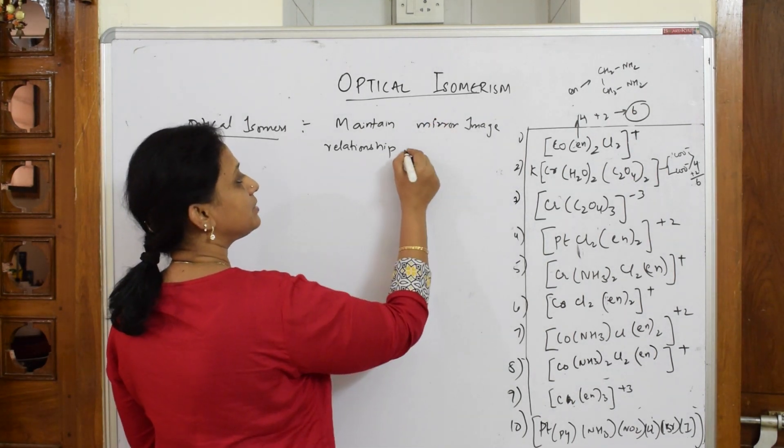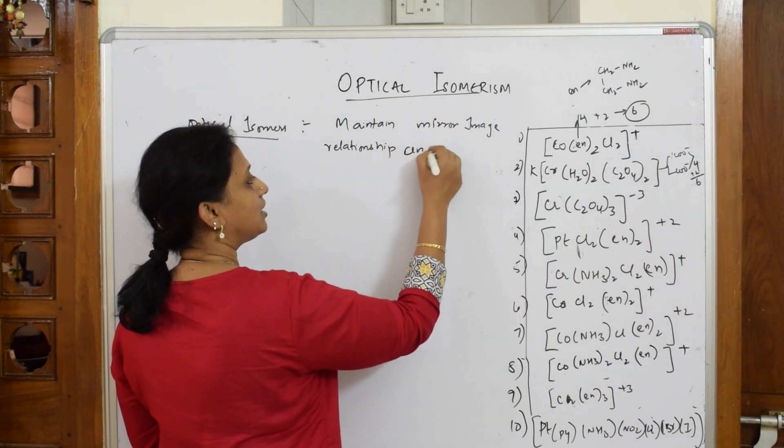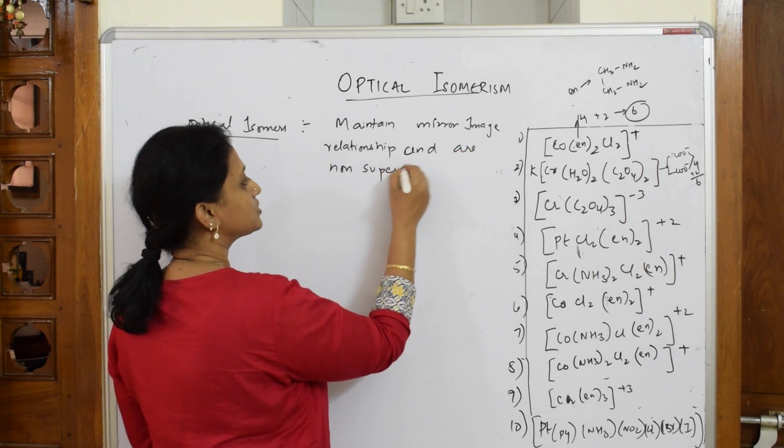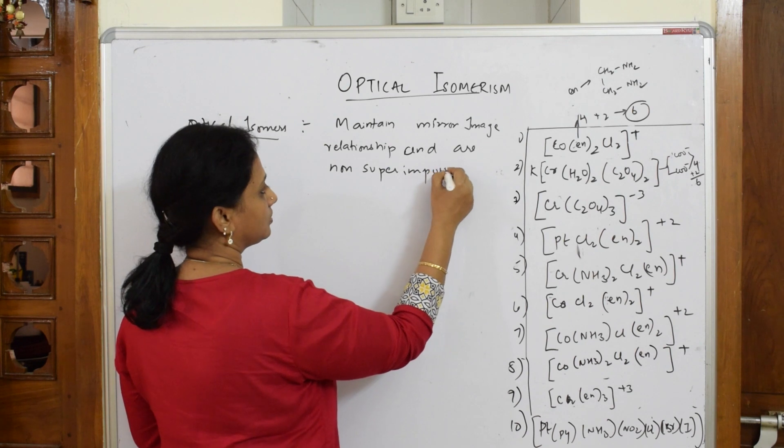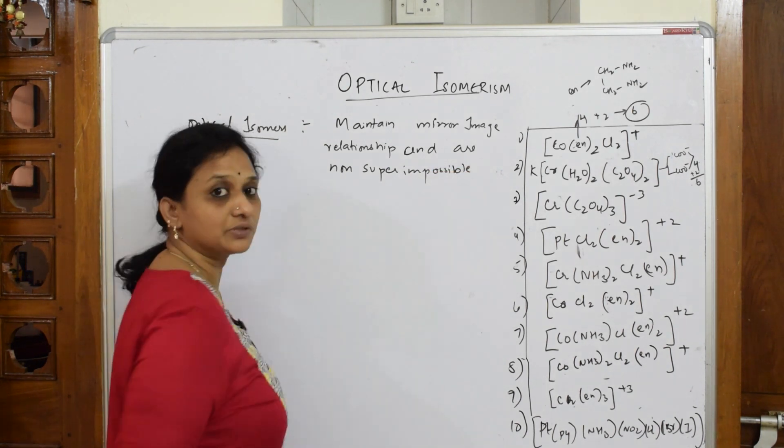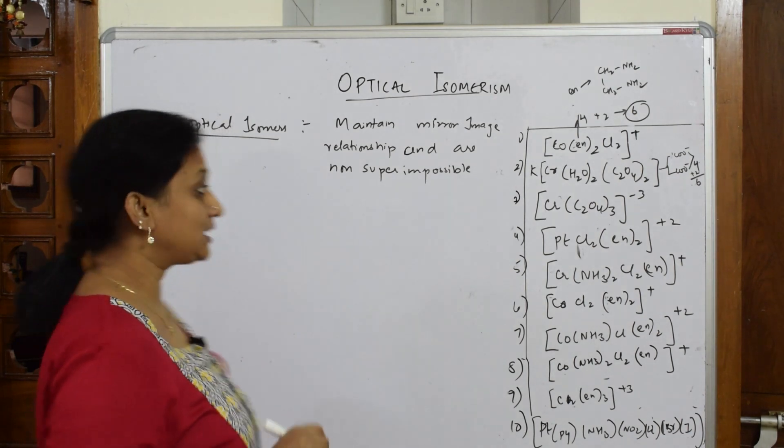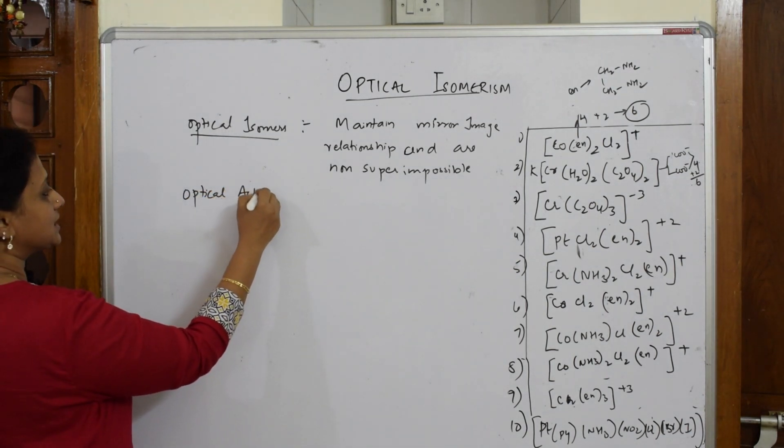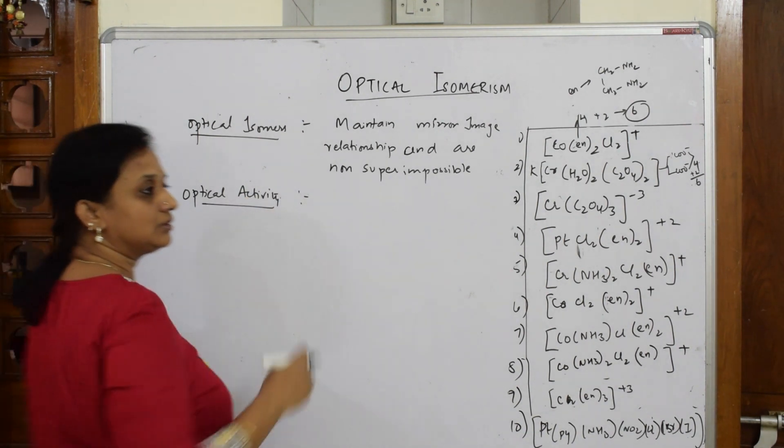And after this, most important, the mirror images are non-superimposable. That is important - mirror image relationship and are non-superimposable. Then such are called optical isomers.